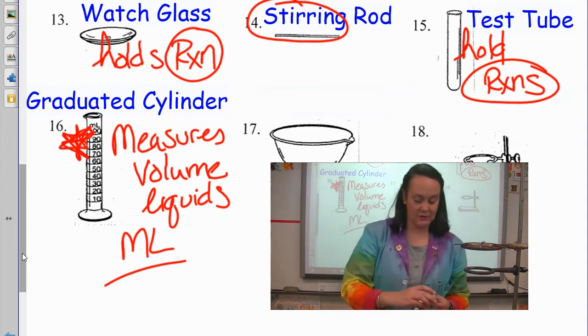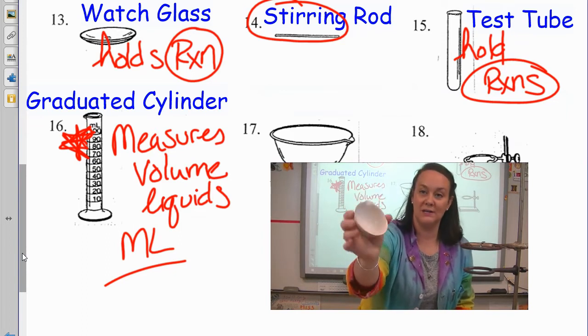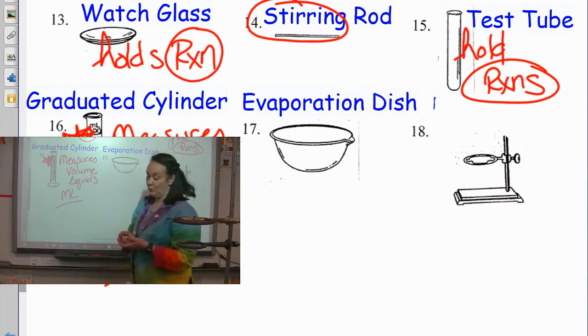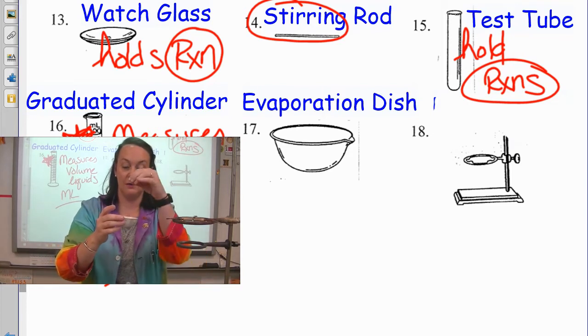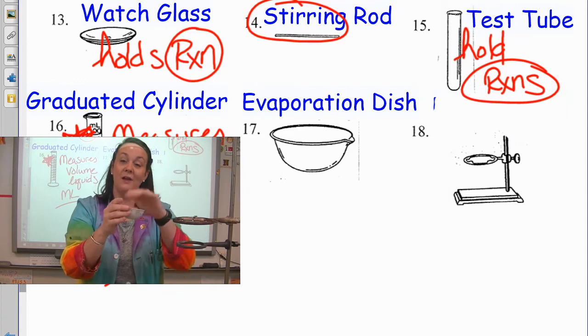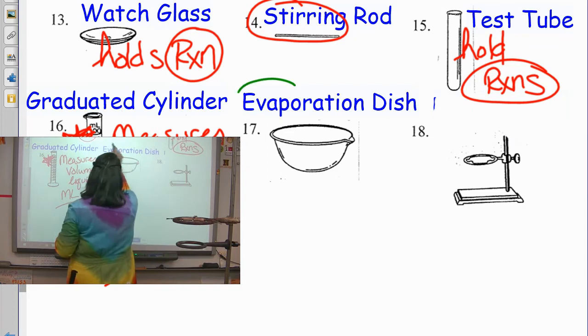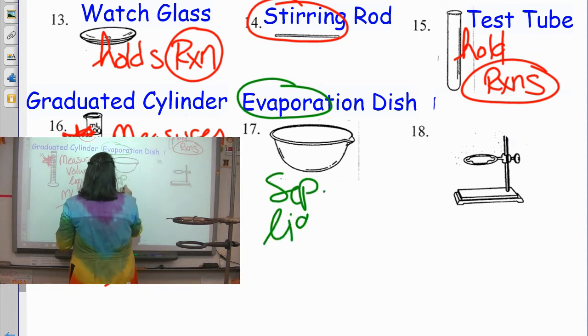Number 17. Probably wouldn't know what this is. We only use it a couple times. This is called an evaporating dish. An evaporating dish. You can probably tell what it does based on its name. If you have a solid, like if we have a hydrate or anything like that, you want to put the solid in there. Put it over the Bunsen burner and then remove any liquid from a solid. So, it evaporates any liquids away. So, you could say separates liquids from solids.